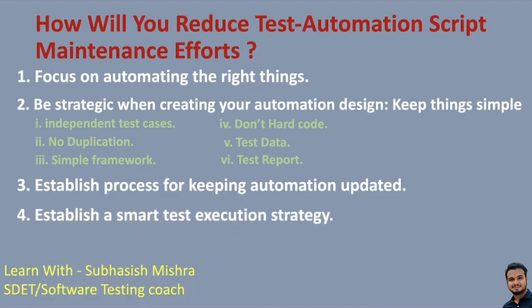The next point is to establish a smart test execution strategy. Your test cases should get executed every day. You can use Jenkins for this and create a nightly build to execute all your test cases. This saves time on manual execution and lets you find your test report every day and analyze any failures. The key thing is: if your test cases are executed frequently and you are analyzing and fixing the failing test cases, then your test cases stay updated and can be used at any point in time.